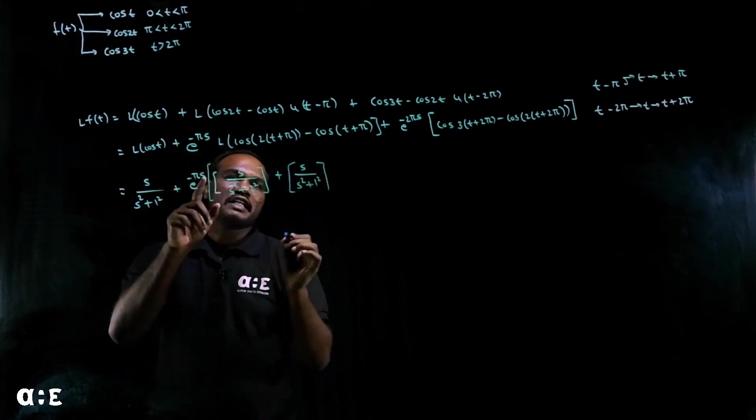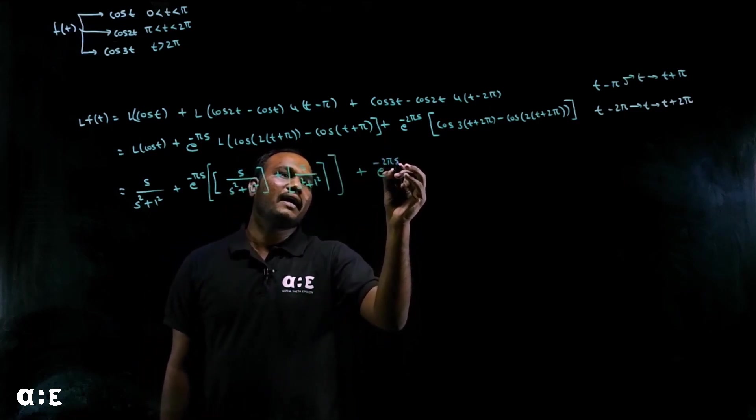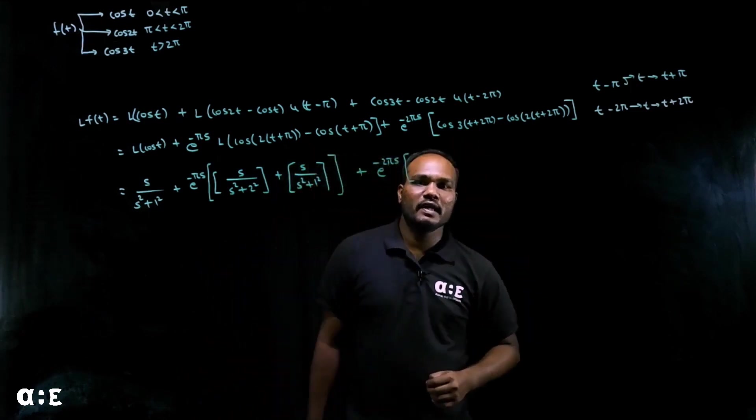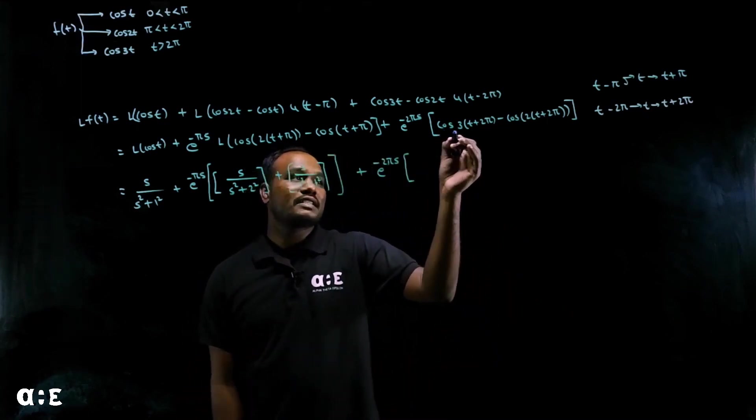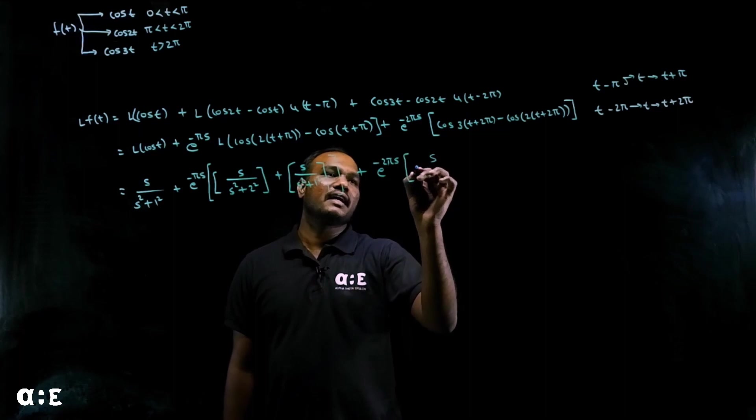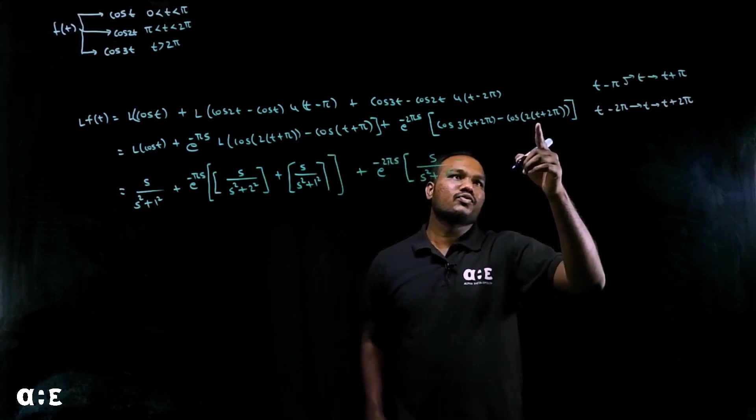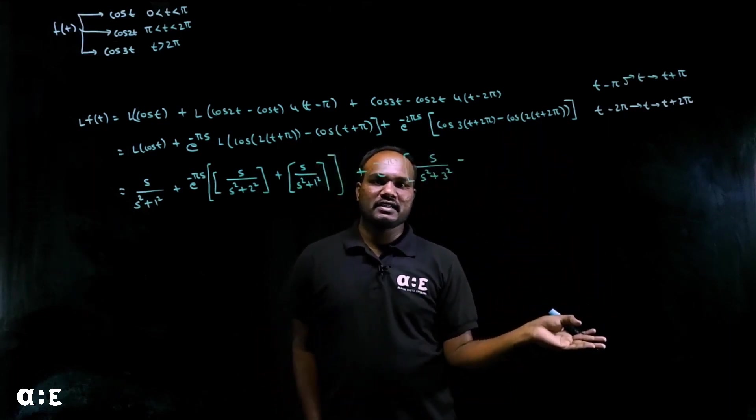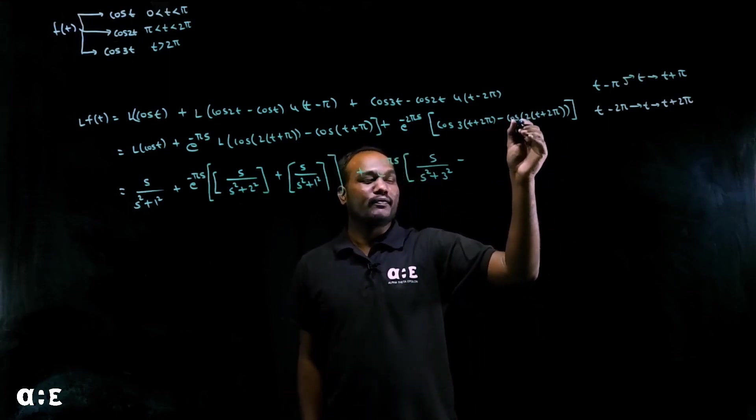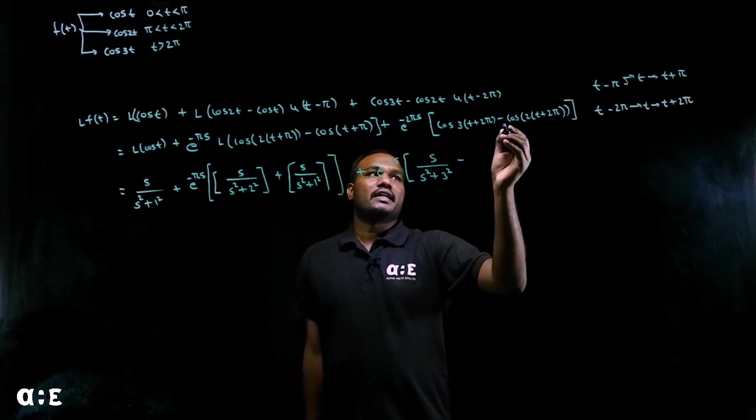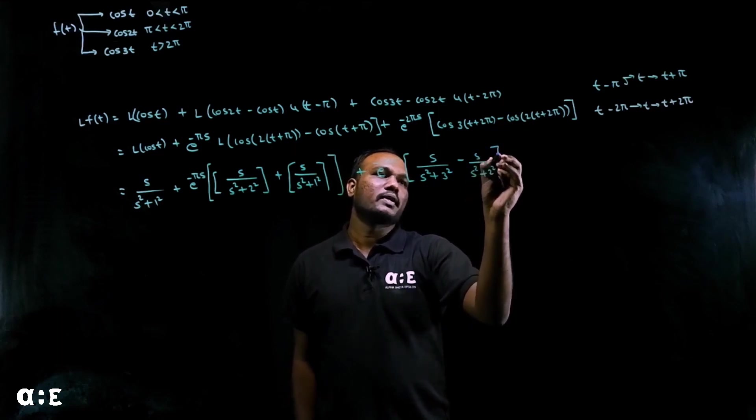This e^(-πs) is for both terms. Plus e^(-2πs). Again cos 6π, where will be 6π? This is in the right hand side, so 6π plus θ is first quadrant. This will become cos 3t, which is s/(s²+3²) minus. Again cos 4π is first quadrant, so 4π plus T is cos T, and cos 2t Laplace is s/(s²+2²).